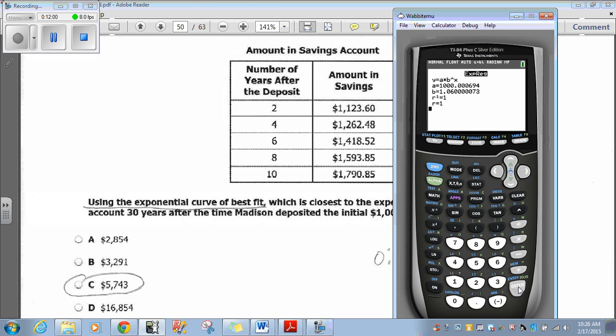So, this is our exponential regression curve of best fit formula. Now, we know what the numbers are at year 2, 4, 6, 8, 10. Let's find out what it is at year 30. So, let me clear this out here. What I will do, I want to bring up my Y1. I will go to VARS, YVARS, function, one, Y1. I want to find out what this formula is at year 30. Open parenthesis, 30, close parenthesis, enter. Tells me $5,743.